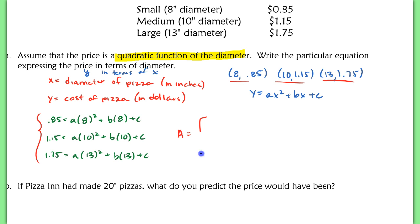Let's define matrix A. I'm going to take the coefficients: 64, 8, and 1. And then my last row will be my answers, the constants 0.85 here. Then 100, 10, 1, and 1.15. And then finally, 169, 13, 1, and $1.75.